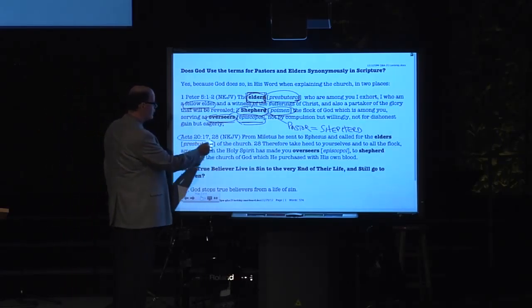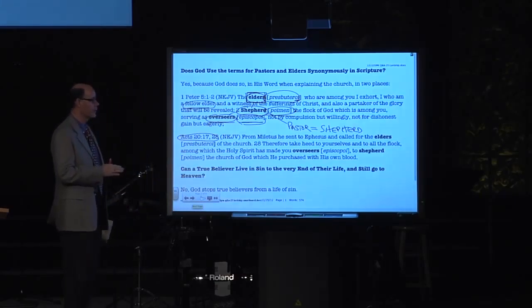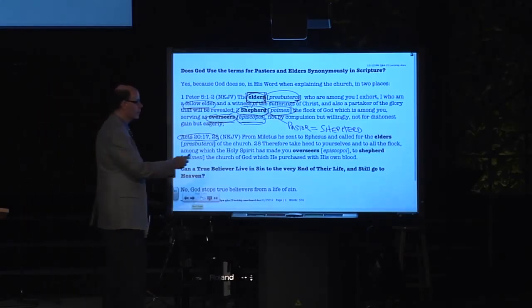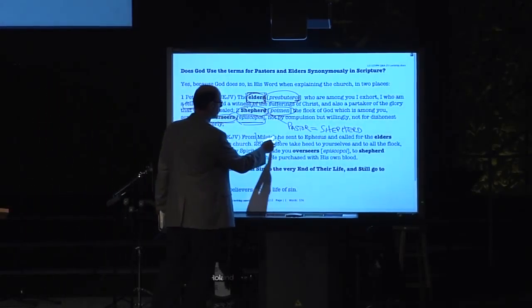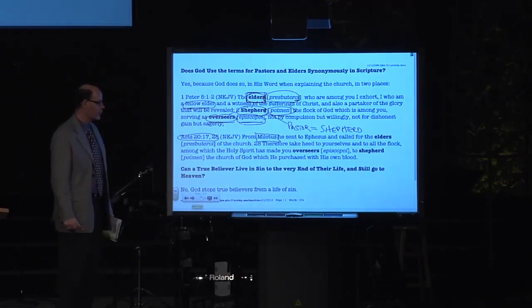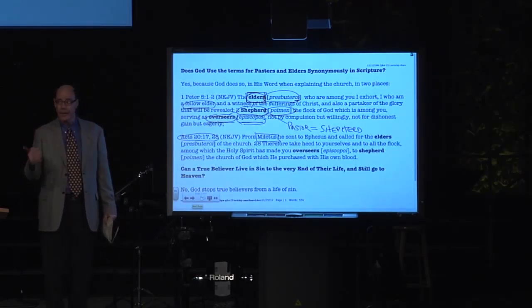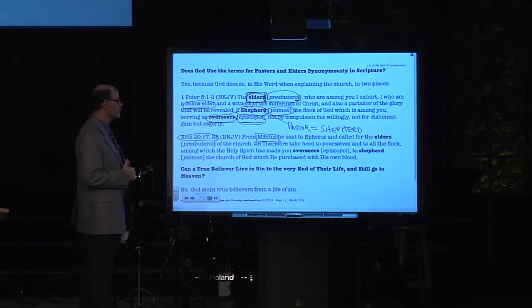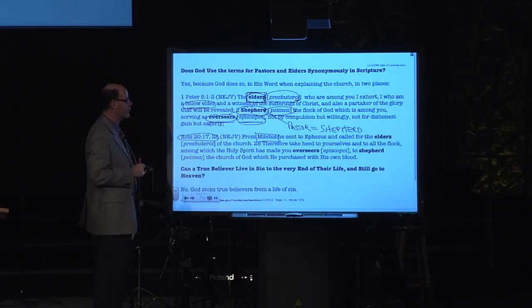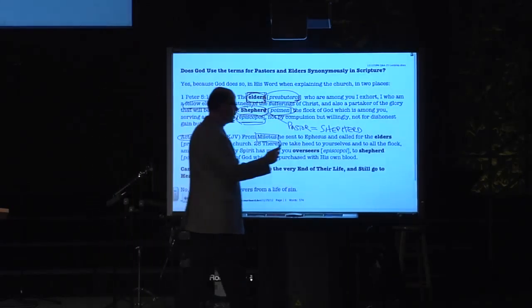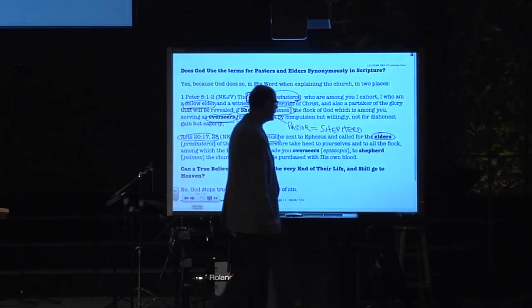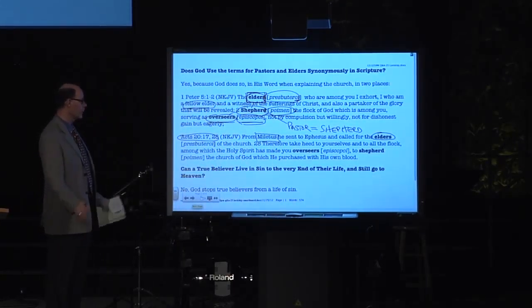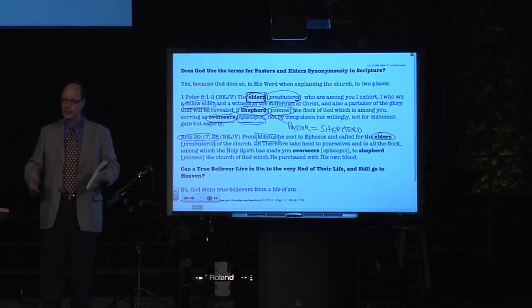Because solo pastoring - one pastor with no fellow elders to balance the giftedness and even the burdens and desires and direction - is very dangerous in history. So it's a plurality of elders. Now look at Acts 20. This is Paul's charge to the Ephesian elders. They came down to the port city of Miletus. If you ever get to the Holy Land, Miletus is one of the best preserved spots. You can still sit in the actual theater looking out at the port where Paul would have sailed in.